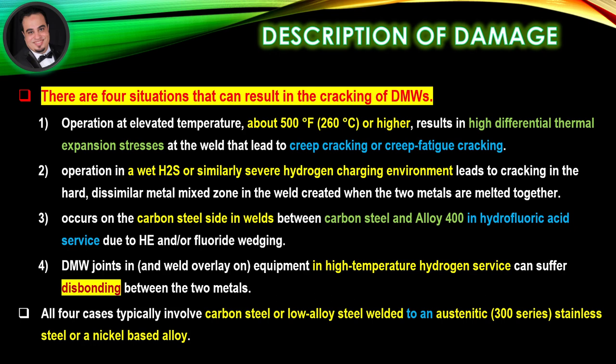In the fourth situation, dissimilar metal weld joints and weld overlay on equipment in high-temperature hydrogen service can suffer disbonding between the two metals. This is commonly referred to as hydrogen disbonding. All four cases typically involve carbon steel or low-alloy steel welded to an austenitic 300-series stainless steel or a nickel-based alloy.